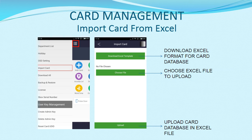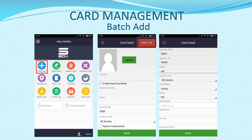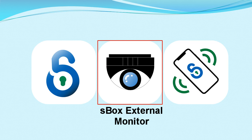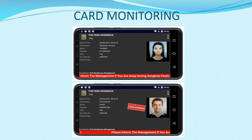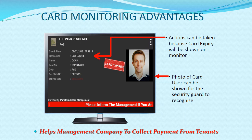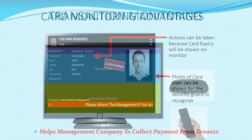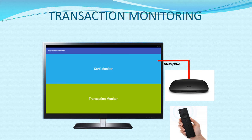The applications are user-friendly and can import cards using an Excel file. Batch add is used to add multiple cards in sequence at once. S-Box external monitoring offers two viewing choices: card monitor and transaction monitor. Card monitor tracks card expiry before action is taken, and transaction monitor can play back each event video.